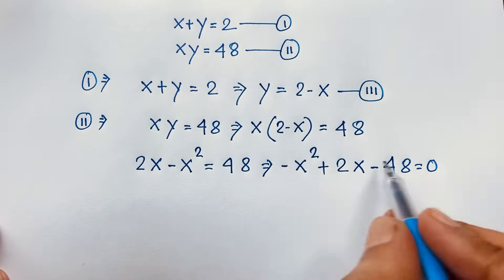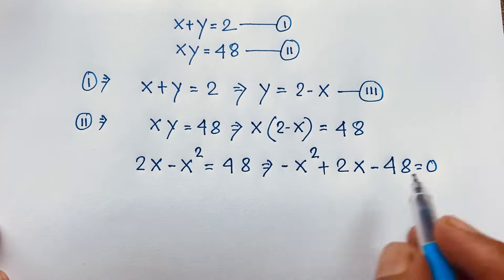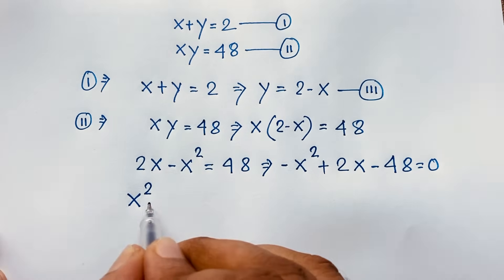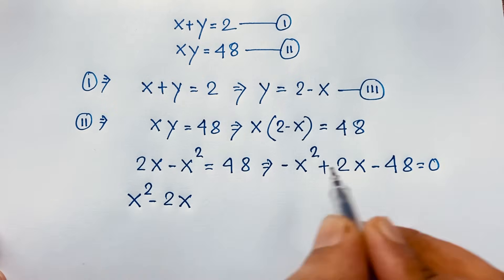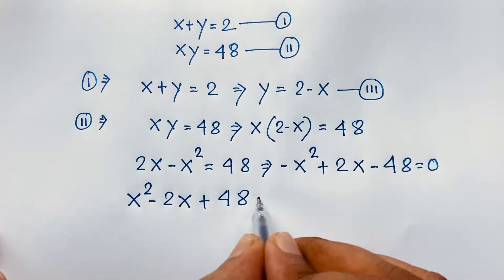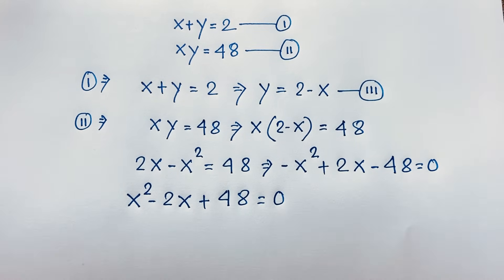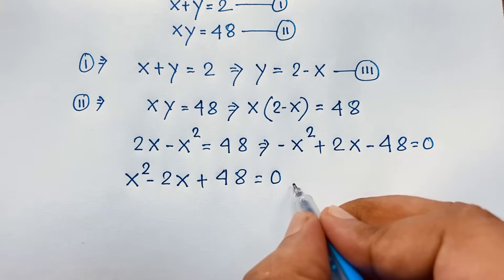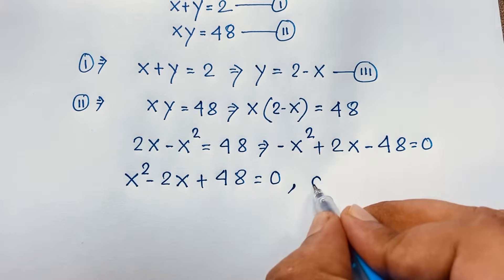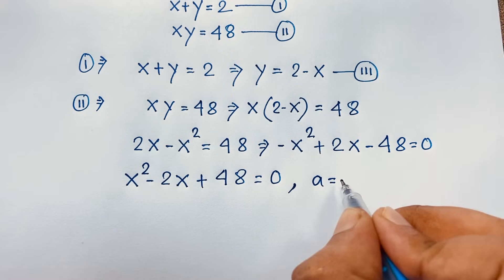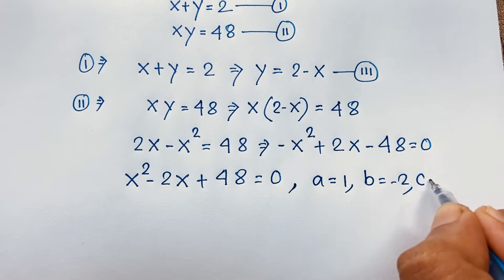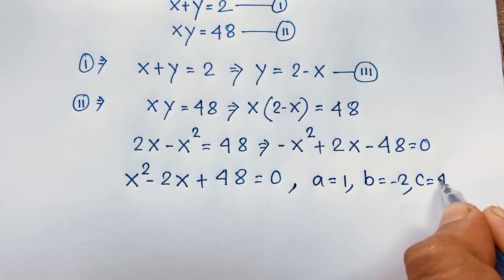Now I multiply both sides by a negative sign, so it will be positive x squared minus 2x plus 48 is equal to 0. Now here x is equal to what? If I compare, it is a nice quadratic equation where a is equal to 1, b is equal to negative 2, and c is equal to 48.